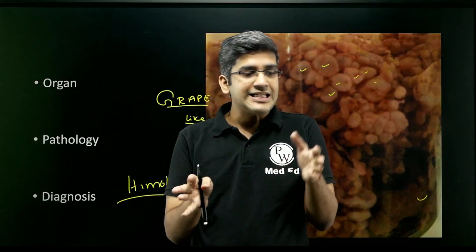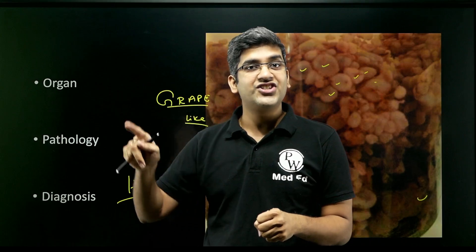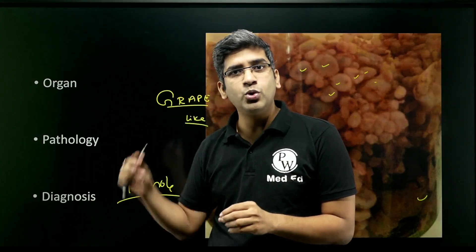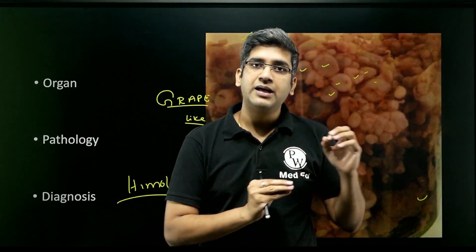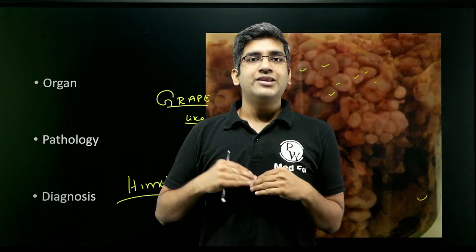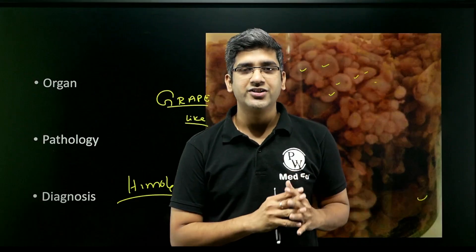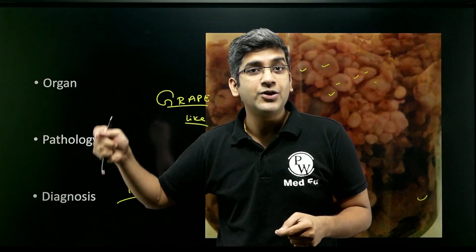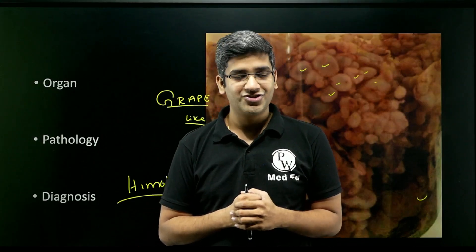A few words about molar pregnancy: it can be partial mole or complete mole. A question for the comments: which molar pregnancy has 69 chromosomes and which has 46? Hint: one is partial, one is complete. Microscopically, hydatidiform mole shows hugely dilated villi — these grape-like clusters are nothing but dilated villi. Partial mole has fetal parts; complete mole has only molar tissue with no fetal parts. The serum marker is beta-hCG, which will be elevated. After treatment, follow-up with beta-hCG is essential because molar pregnancy is a major risk factor for choriocarcinoma. See you in the next video!